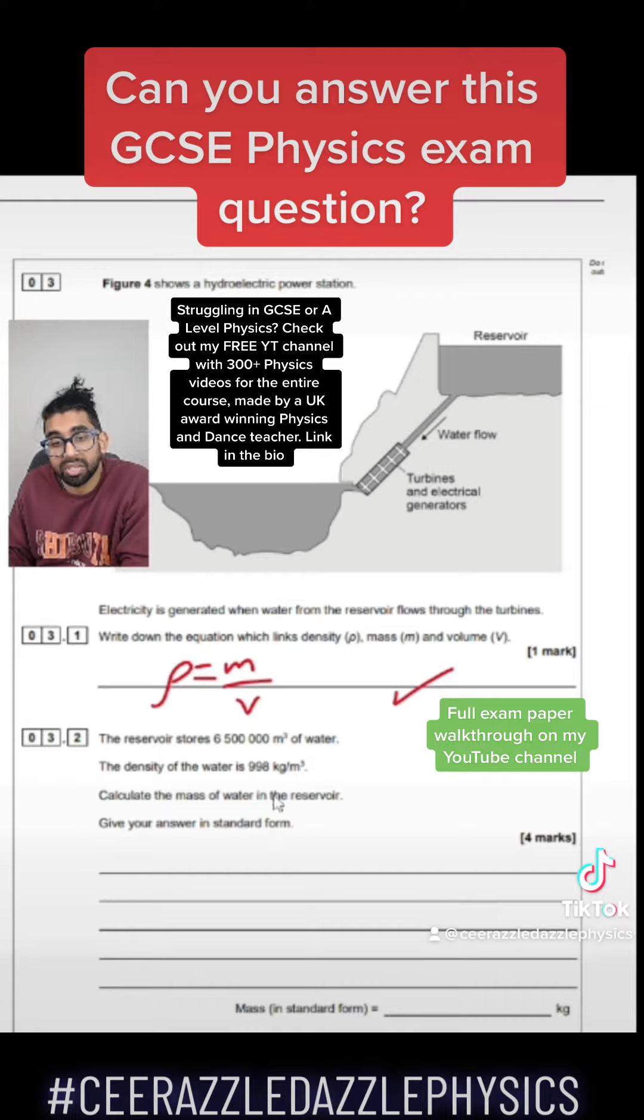Right, in order to tackle this problem you've got to use the formula and rearrange it to make mass the subject. We know that density is equal to mass divided by the volume. Therefore, mass is equal to the density times the volume. So now we can plug our numbers in.